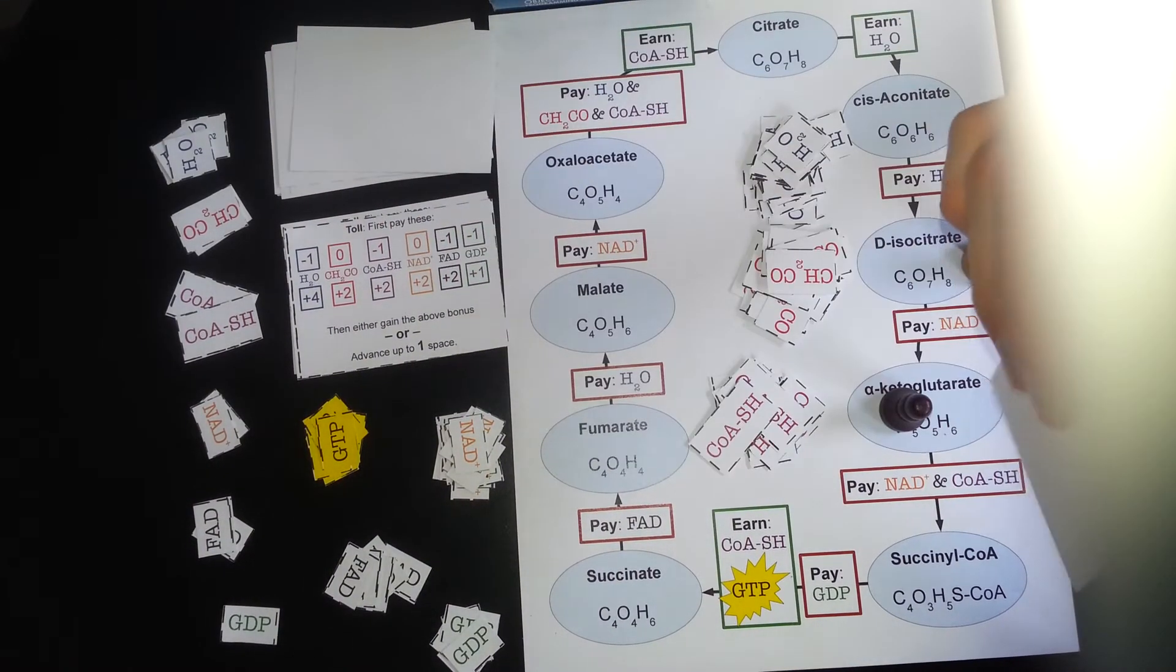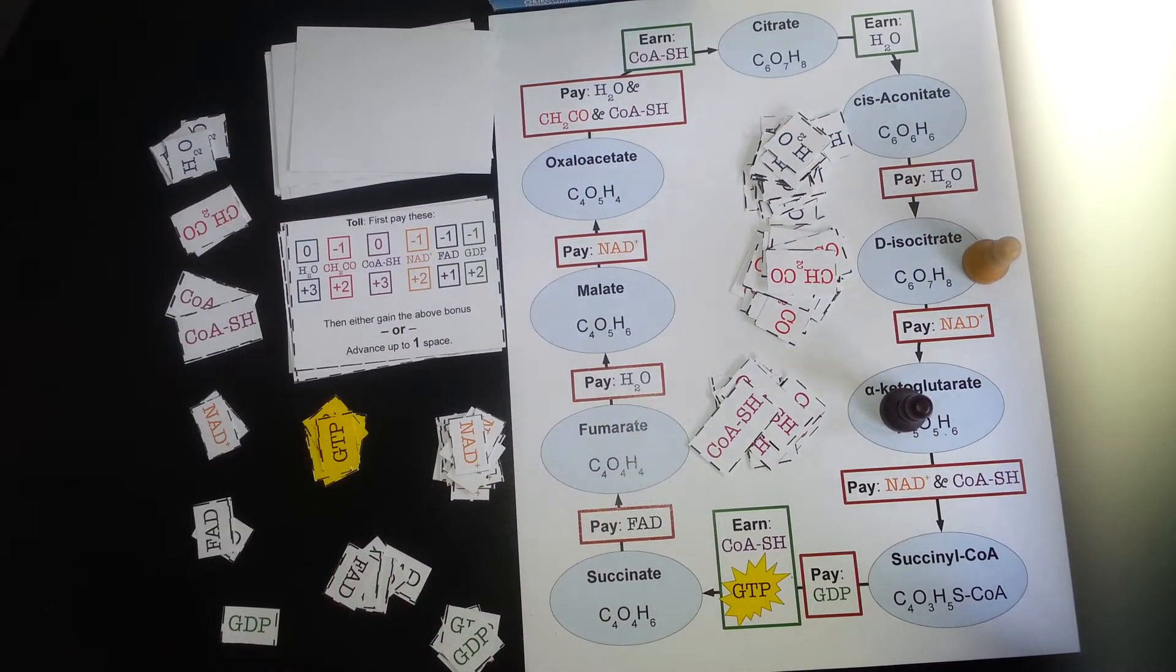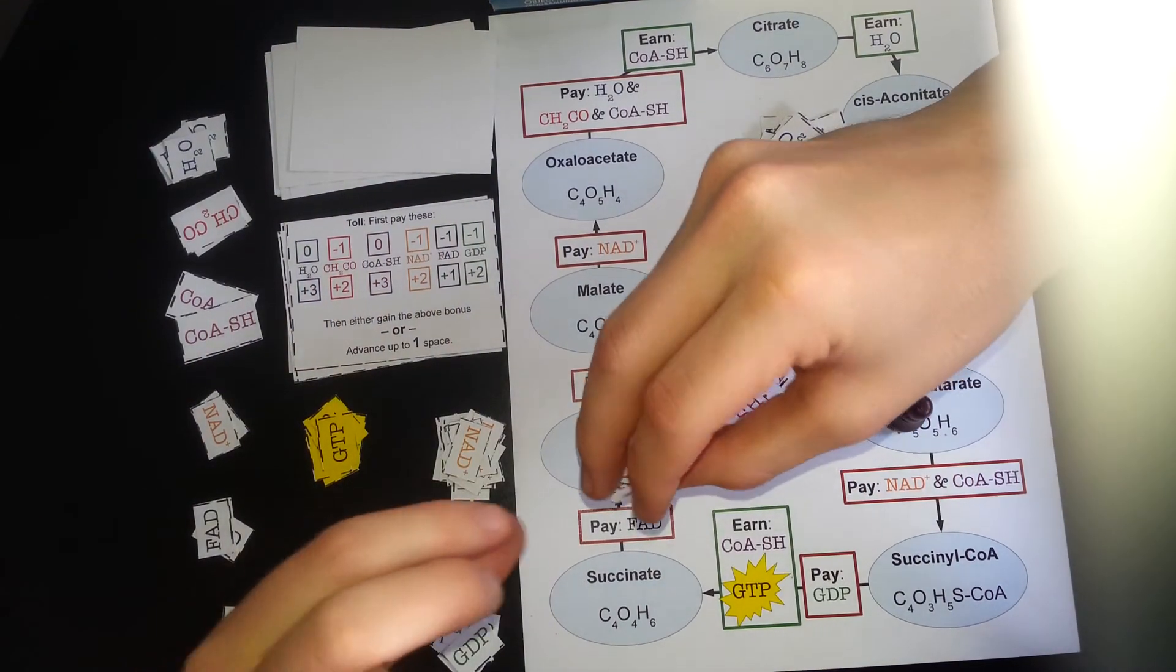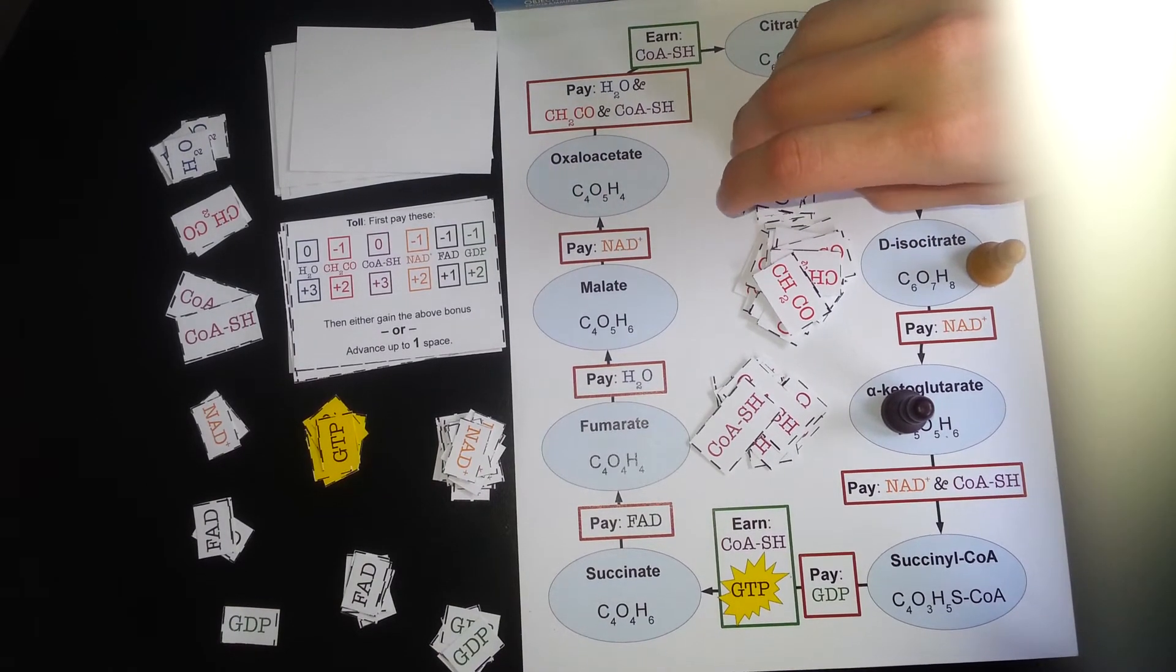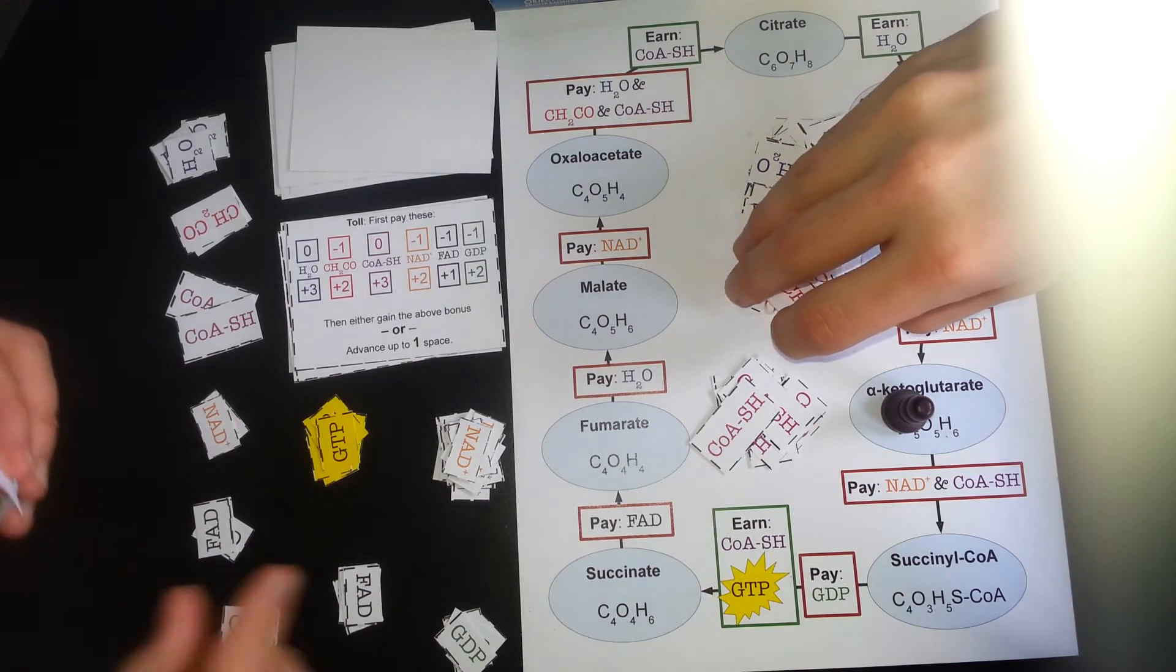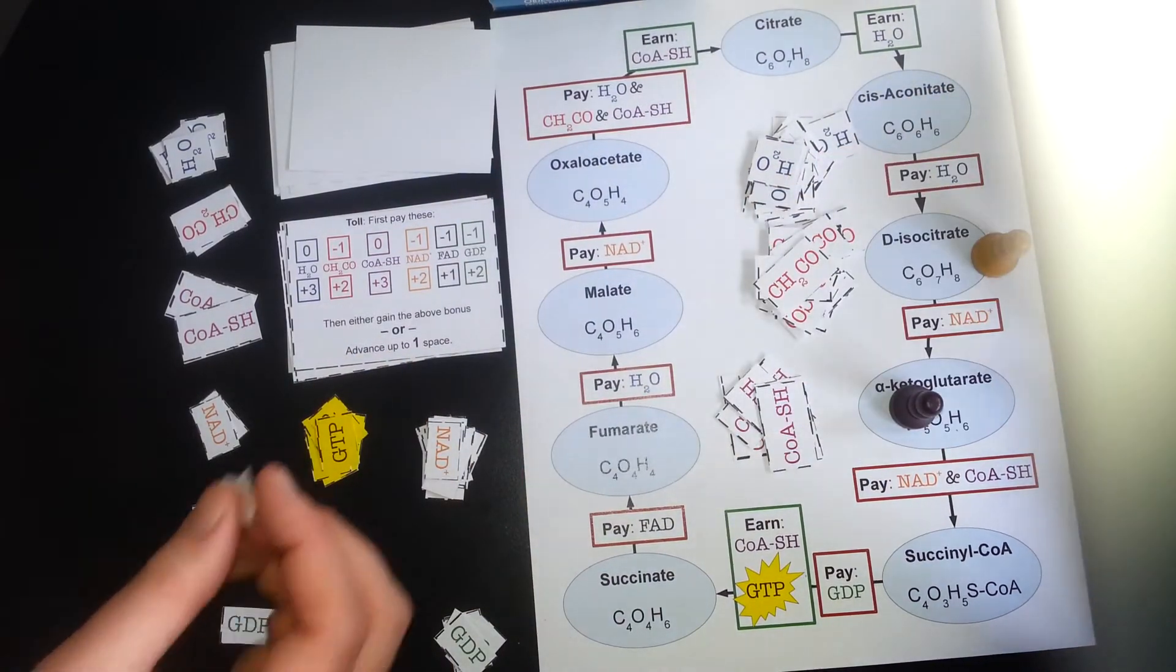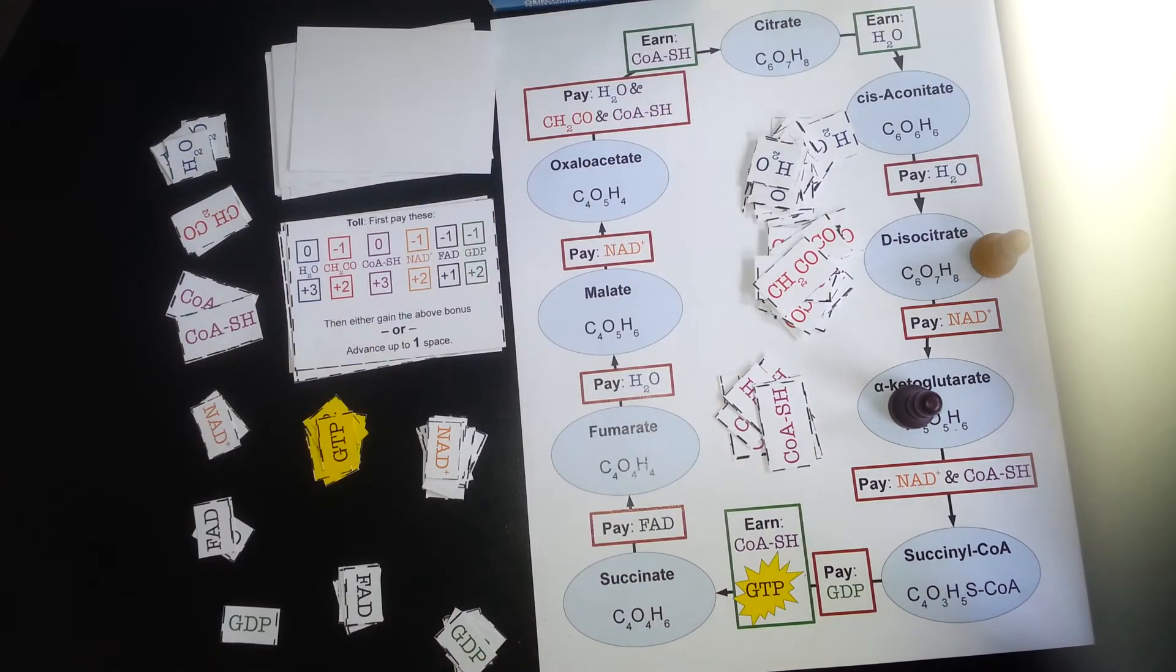Alright, my turn again. Flip it over. Thank you. So first pay that toll. Pay the toll. So I have CH2CO, an NAD+. Yup. An FAD. And I do not have any GDP. Alright, so you don't even have to pay that part. And since I do not have the CoASH, I cannot move. So I'm going to take the bonus. Alright. Three waters, two CH2COs, three CoASH. Got two NAD+, one FAD, and two GDPs. Alright.